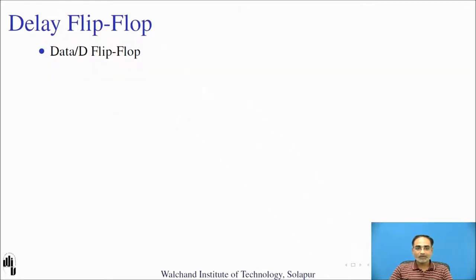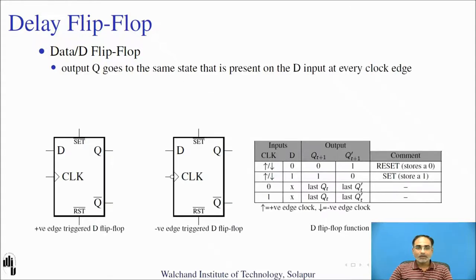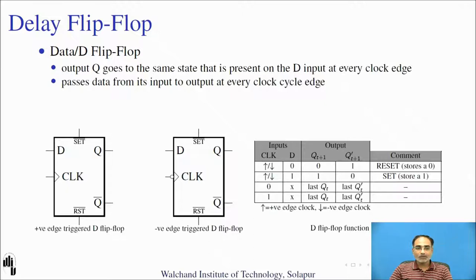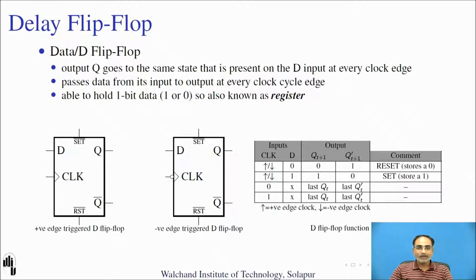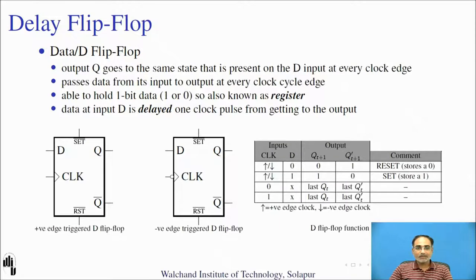Let us understand what a D flip-flop is. It is also called a delay flip-flop or data flip-flop. The output goes to the same state that is present on the D input at every clock edge. D flip-flops are used to pass data from input to output at every clock cycle edge. A D flip-flop is able to hold 1-bit of data — either 1 or 0 — and because of this behavior it is also called a register. Data at input D is delayed one clock pulse from getting to the output.